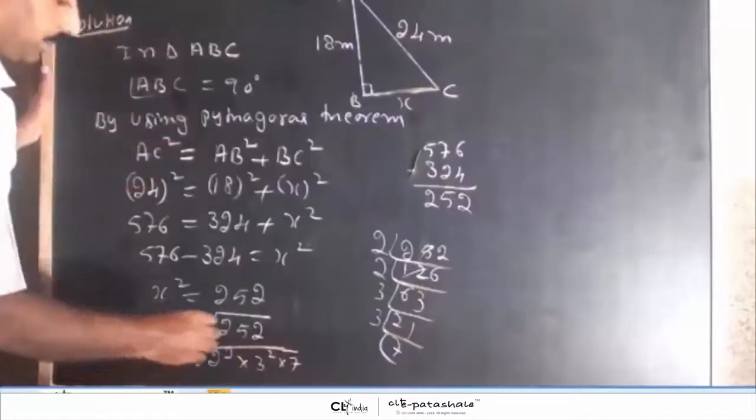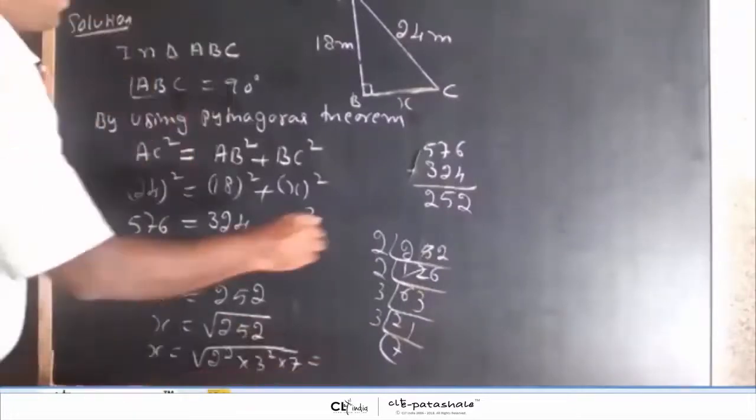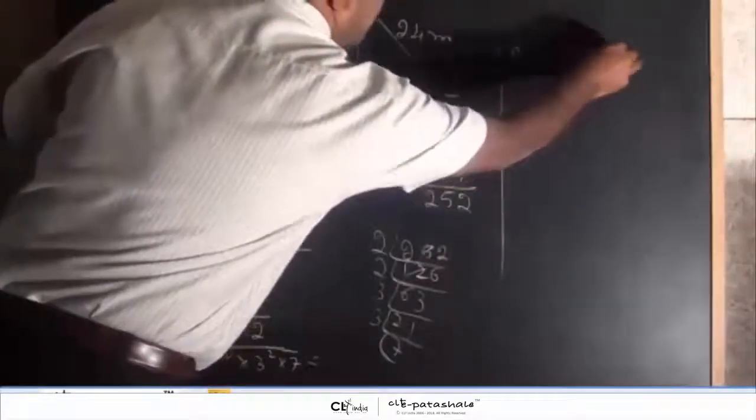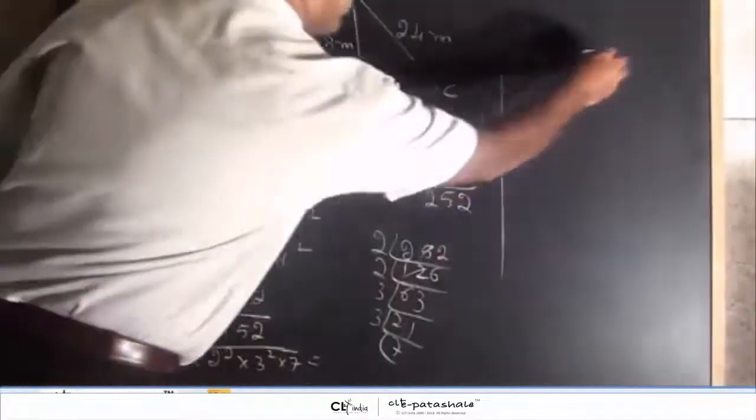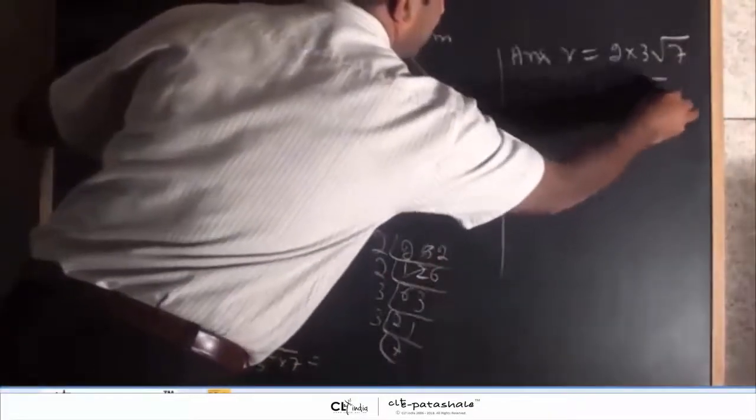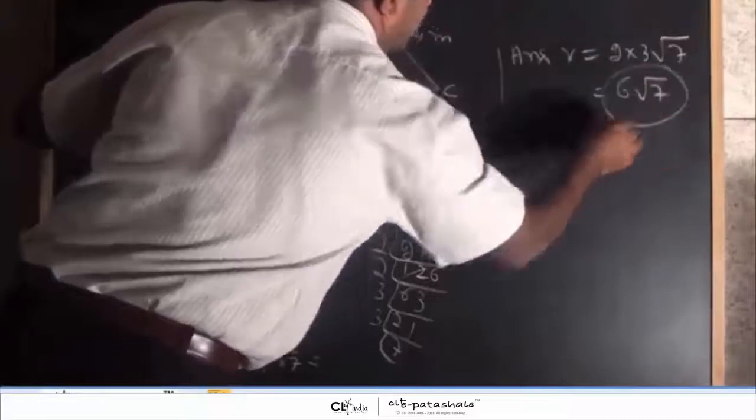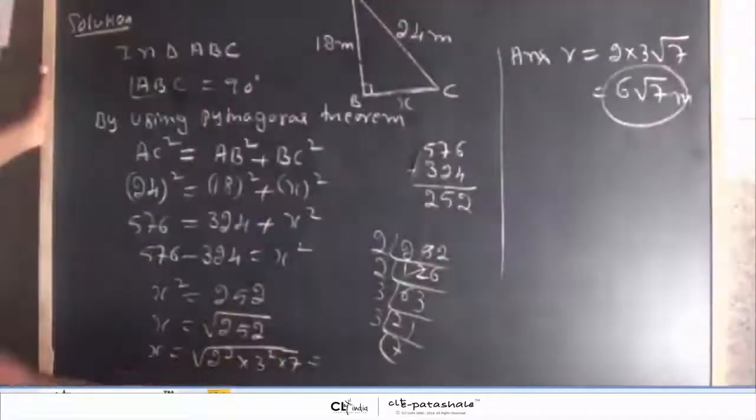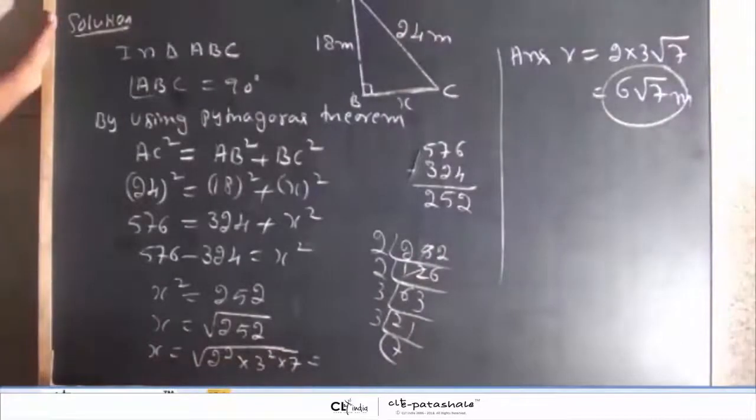The final answer is x is equal to 2 into 3 into root 7, which is 6 root 7. 6 root 7 is the length of the stake, which is 6 root 7 meter.